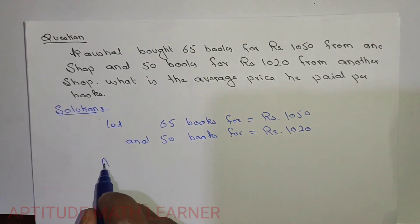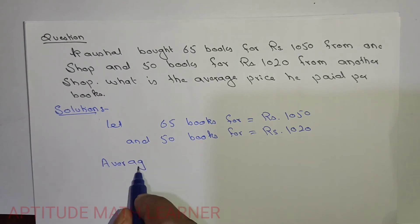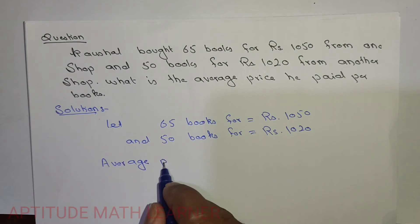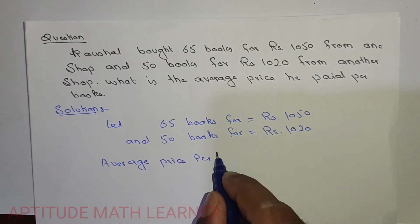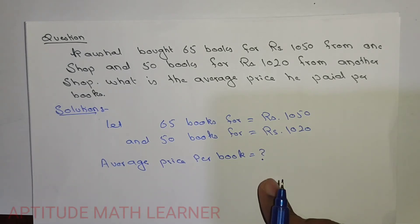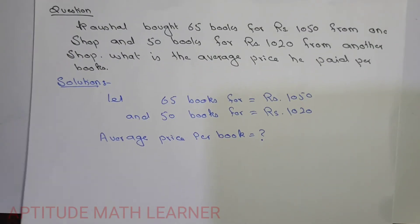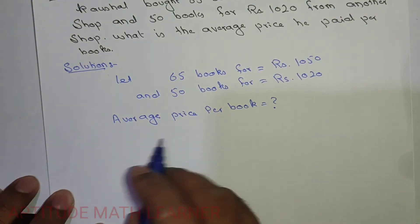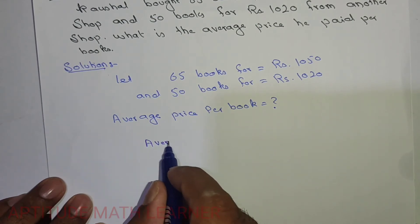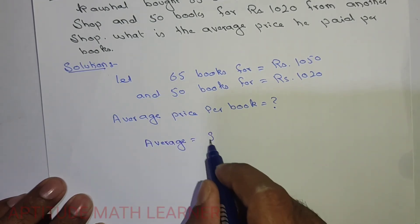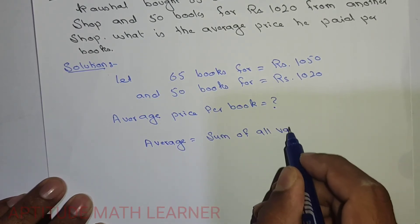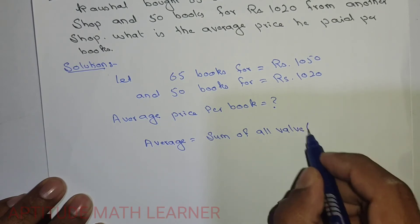So what is the formula of average? We are having the formula of average, that is: Average equals sum of all values, here that is books, upon total number of values.